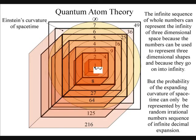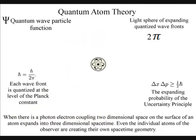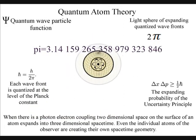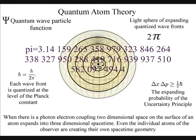We have irrational numbers like pi because the physical shape of the wave function is spherical and expands as an inverse sphere, forming the arrow of time.